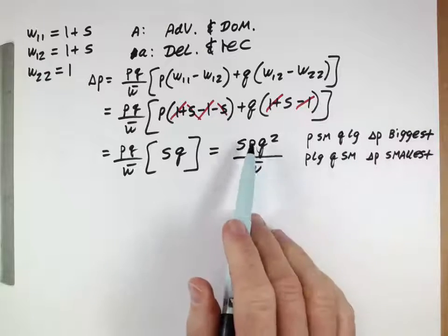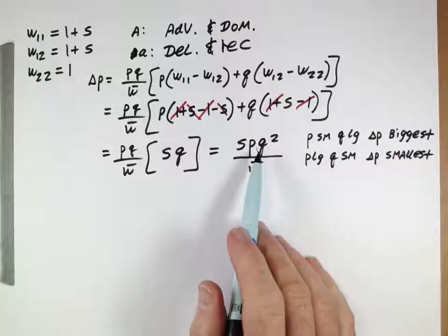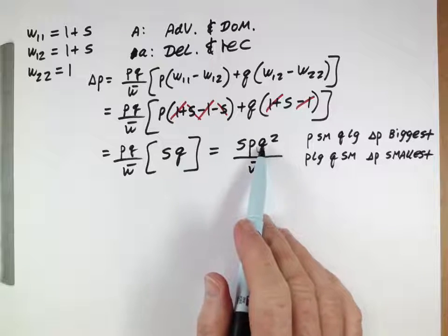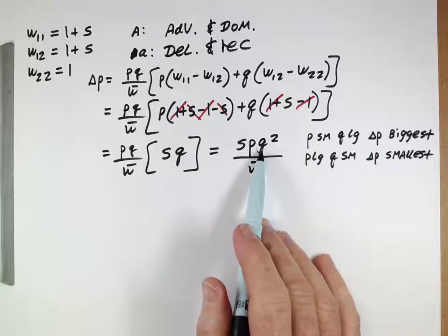So, remember both P and Q are less than 1. It's which one is getting squared that's going to have the biggest effect on making this small.